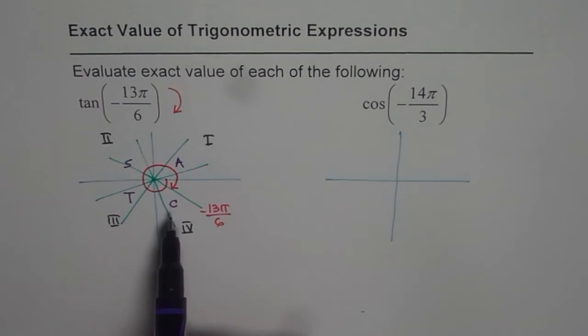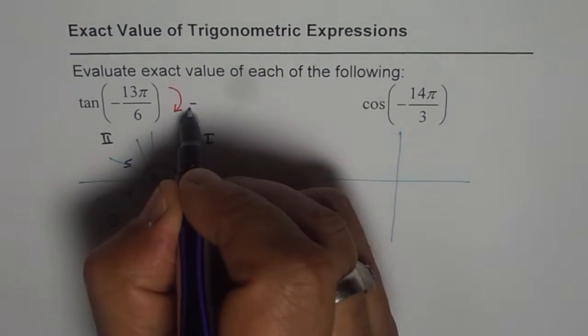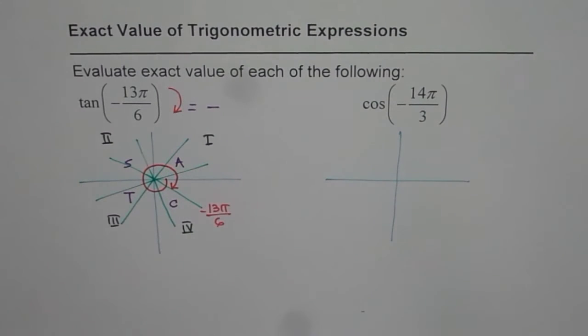We are looking for tan. In quadrant 4, cos is positive, all others are negative. Therefore, we should write down first the sign. Sign is negative for this tan negative 13π by 6.